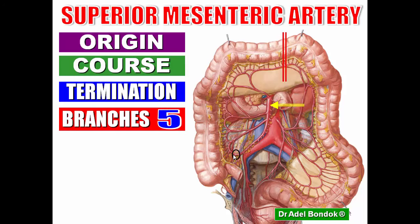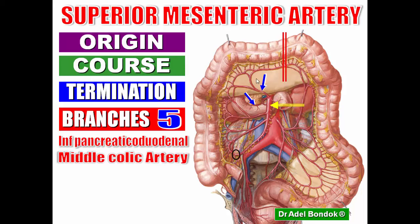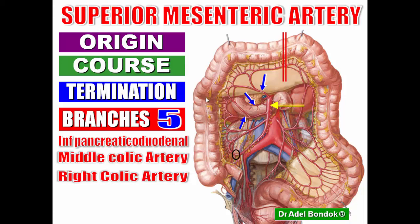The superior mesenteric artery gives five branches. First, the inferior pancreatic-duodenal artery — between the duodenum and the head of the pancreas — supplying the lower half of the duodenum and anastomosing with the superior pancreatic-duodenal artery at the biliary orifice. Second, the middle colic artery, which enters the transverse mesocolon and divides into left and right branches, supplying the right two-thirds of the transverse colon. Third, the right colic artery, dividing into ascending and descending branches to supply the ascending colon. Fourth, the ileocolic artery, dividing into a colic branch and an ileal branch — the ileal branch supplies the terminal ileum, and the colic branch supplies the ascending colon, cecum, and vermiform appendix. Fifth, jejunal and ileal branches supplying the jejunum and ileum.